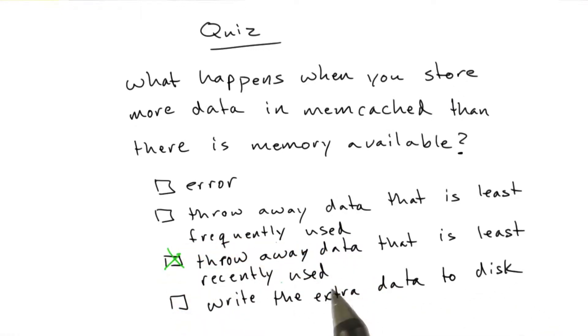Okay, and the answer is Memcached just throws away data that is least recently used.